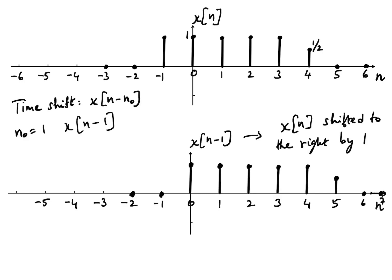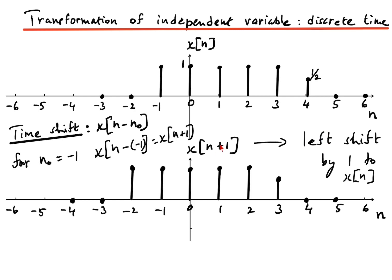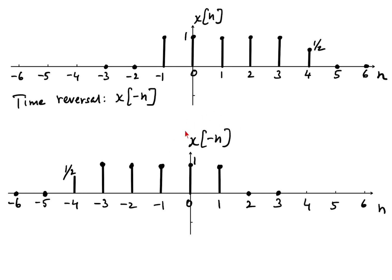An important point to recall: normally a plus indicates a left shift and a minus indicates a right shift. But when the time axis is reversed, the opposite rule applies. If we have x[-n + something], the plus now means a right shift instead of a left shift, because the time axis itself has been reversed. We will see this in the next example combining time reversal and time shift.